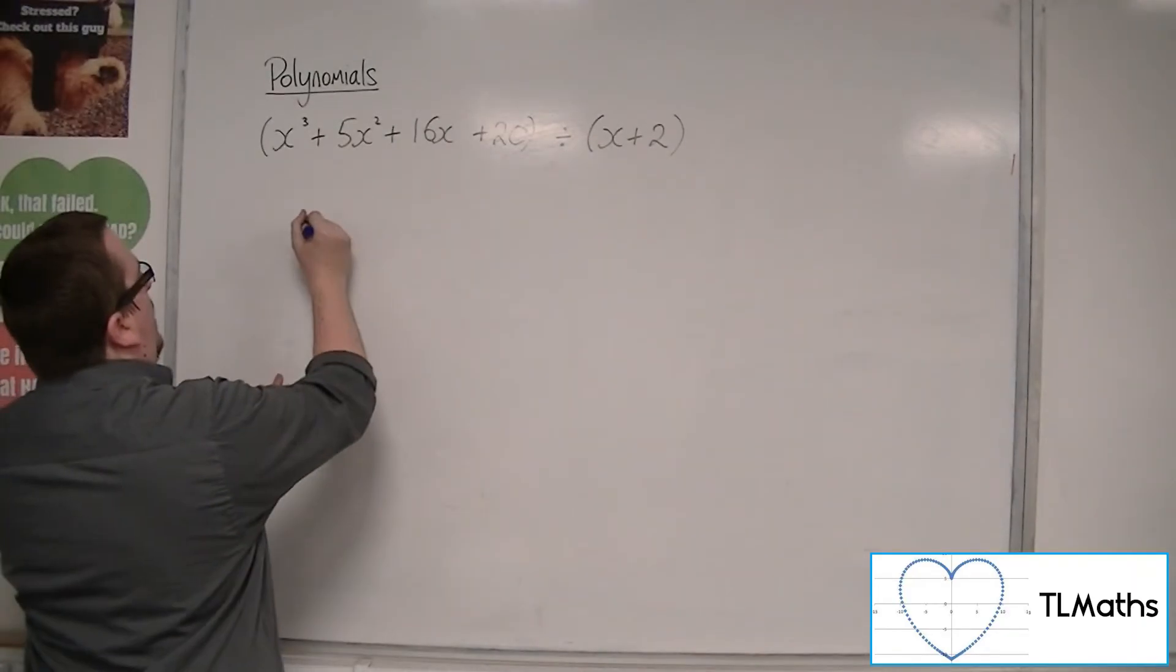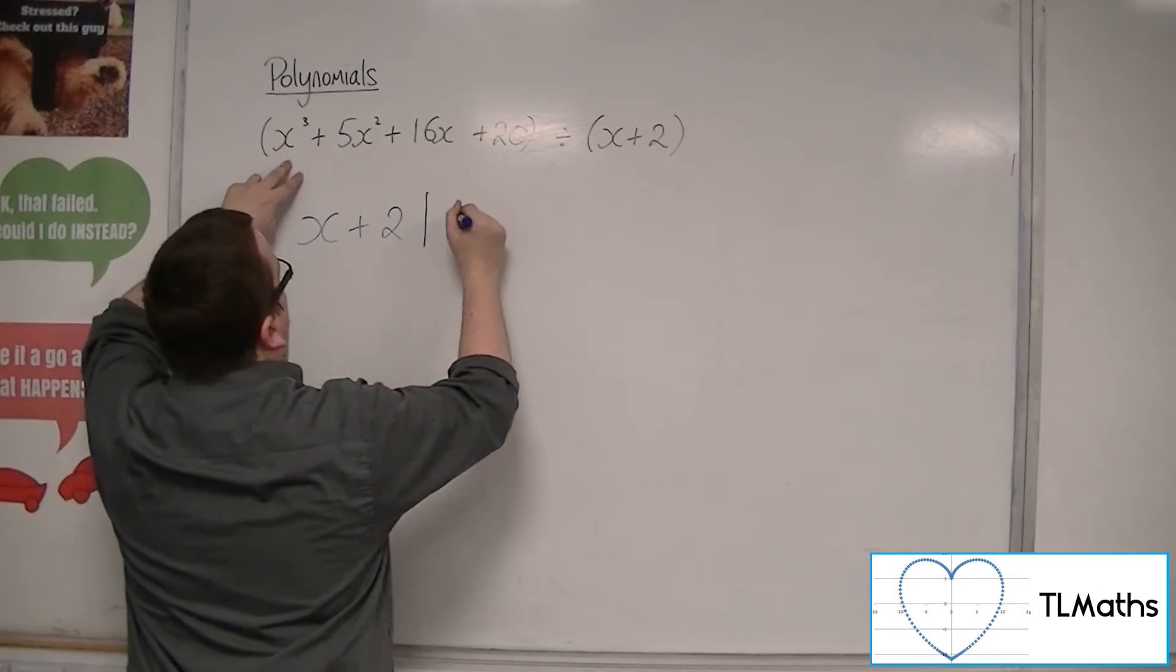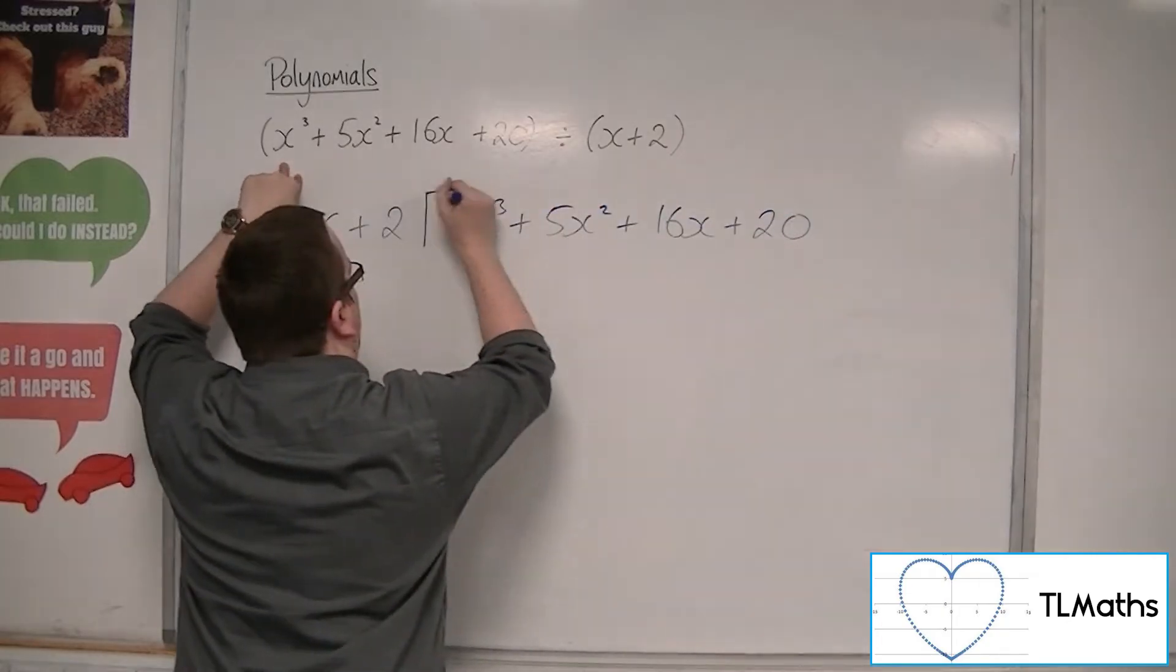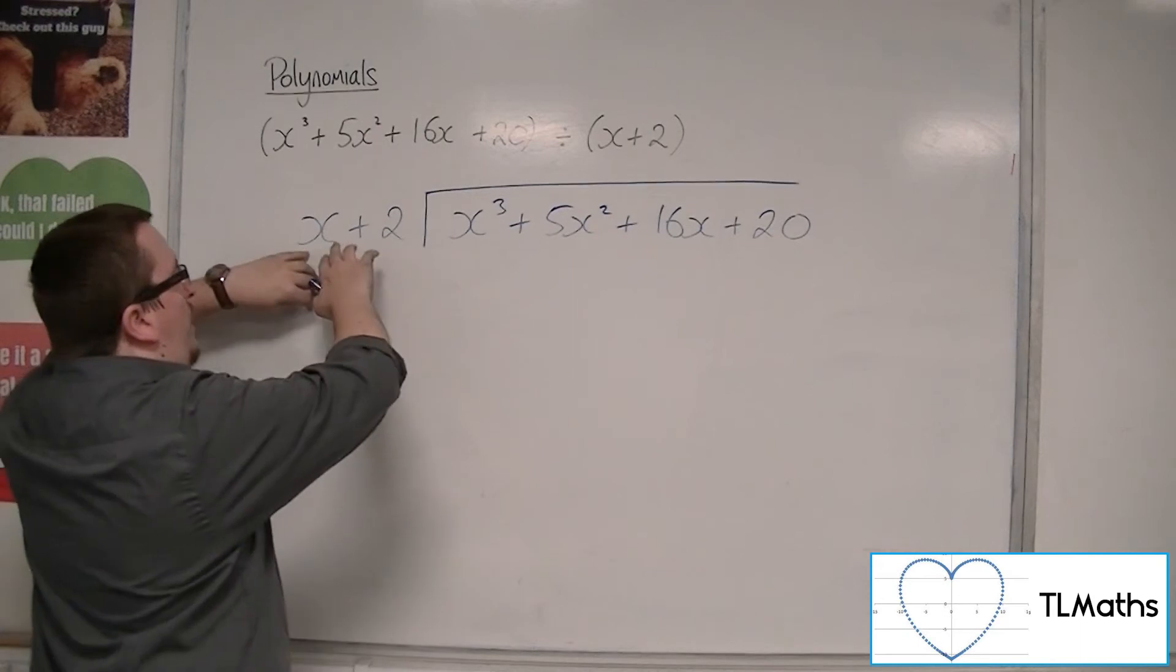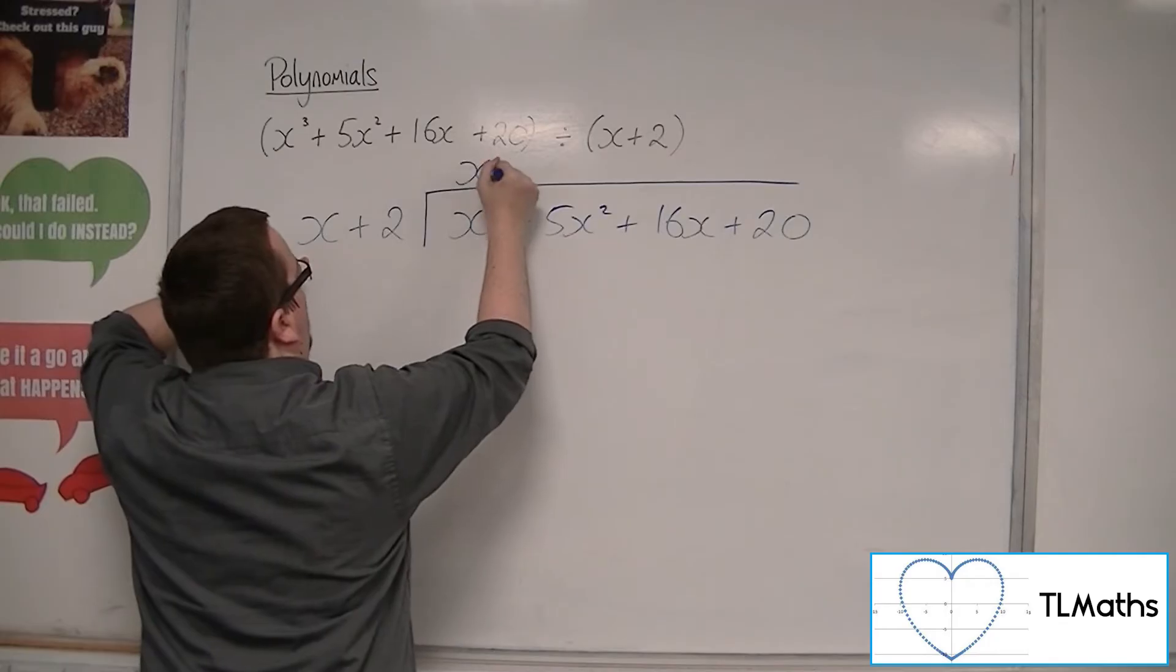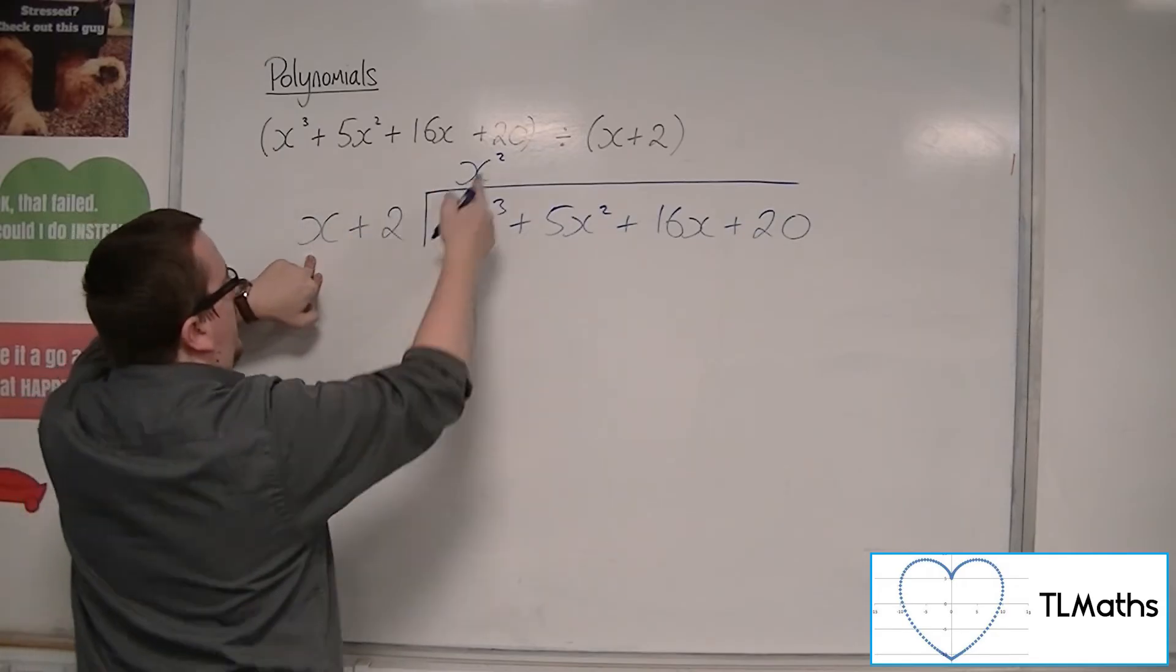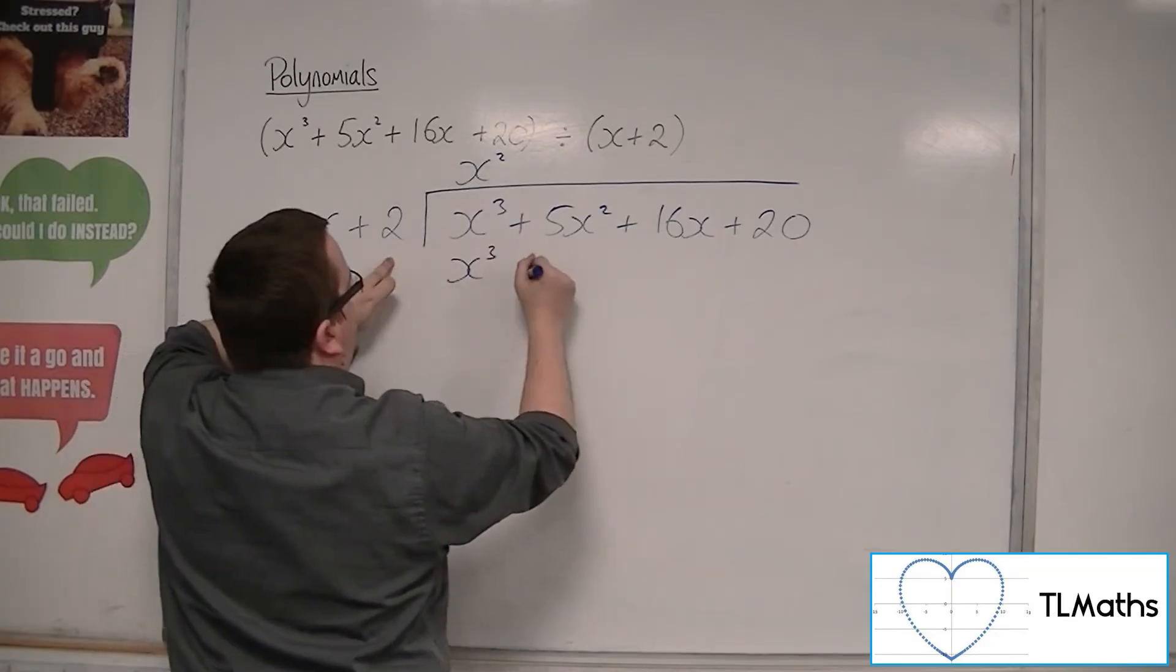We're going to have the x plus 2 outside of the bus stop, and we've got x cubed plus 5x squared plus 16x plus 20 inside. We're always working with this x. x into x cubed goes x squared. You then multiply the x squared by both of those terms. So x squared times x is x cubed, and x squared times 2 is 2x squared.